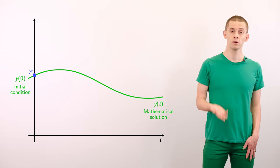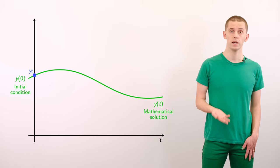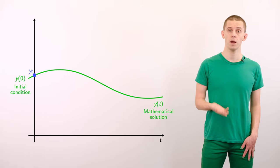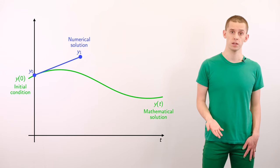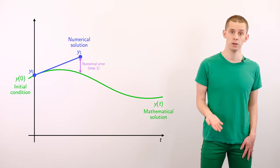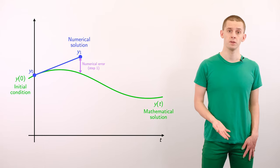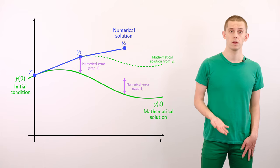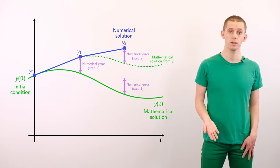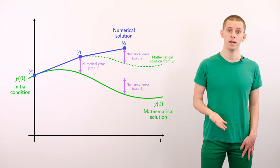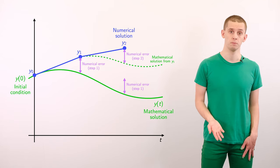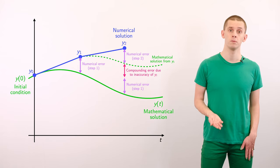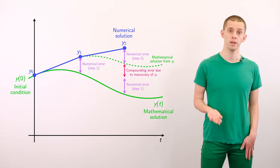For ODEs, looking at convergence is rather subtle and this is because errors can build up over time. Suppose that we take one step of our integration scheme — we'll incur some numerical error. Now if we take a second step, we'll incur some new numerical error. However, in addition, because of the error on the first step we will be slightly off from the true mathematical solution, and therefore we'll also get some effect of compounding error from that previous deviation.